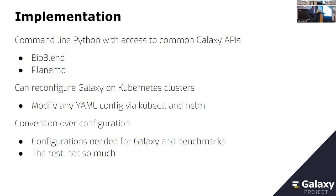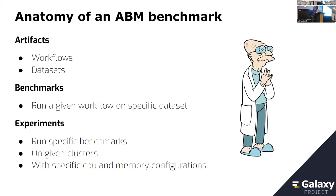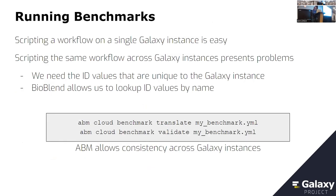We can then pull runtime information out of Galaxy to see how things actually ran. When I talk about a benchmark, I'm talking about a relatively specific thing. Our benchmarking experiments consist of three components: the actual artifacts — the workflows and datasets; a 'benchmark' which is a given workflow on a given dataset; and an 'experiment' which is running a benchmark on a given cluster with specific parameters.